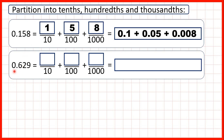So now we have 0.629. The first digit is the tenths, so that's six tenths. The second digit is the hundredths, so that's two hundredths. And the third digit is the thousandths, so that's nine thousandths.